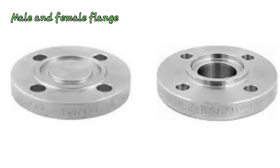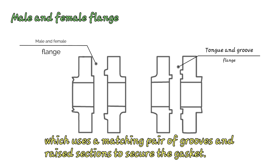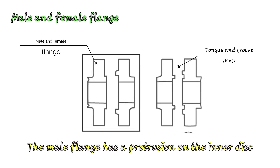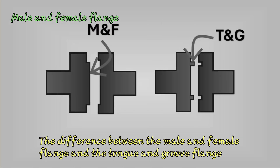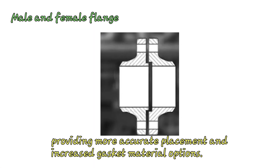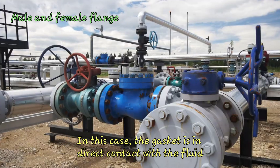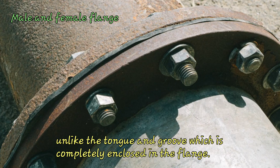The male and female flange is similar to the tongue and groove flange, using a matching pair of grooves and a raised section to secure the gasket. The male flange has a protrusion on the inner disc while the female has an indentation on its inner face. The difference is that the male and female flange retains the gasket on the female face, providing more accurate placement and increased gasket material options. In this case, the gasket is in direct contact with the fluid, unlike the tongue and groove which is completely enclosed in the flange.